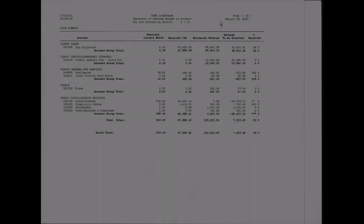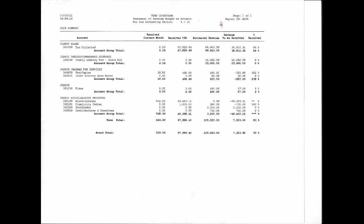A detailed ledger shows everything that happened in a specific time frame. These are usually generated on a monthly basis and can help you see expenditures, fund balances, and revenue status.